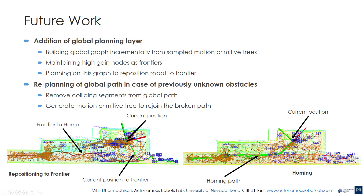Here, we present an extension of the work presented in the paper. This work adds two new features to the current exploration planner. First is a global planning layer. In large-scale environments having multiple branches, the robot needs to be repositioned to a new branch once the current branch is fully explored. Also, due to battery constraints, the robot must return to its home position before the battery is fully drained. To tackle these problems, the global planner iteratively builds a graph of states sampled from the motion primitive trees in the local planning step. Vertices having high volumetric gain are marked as possible frontiers of exploration. This graph is then used to plan paths for repositioning the robot to one of these frontiers and homing.